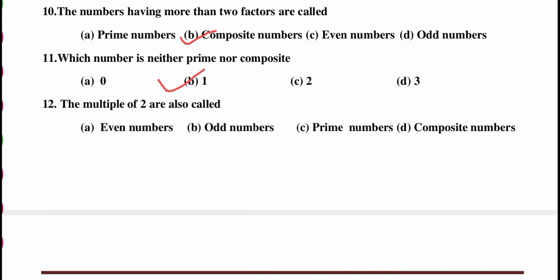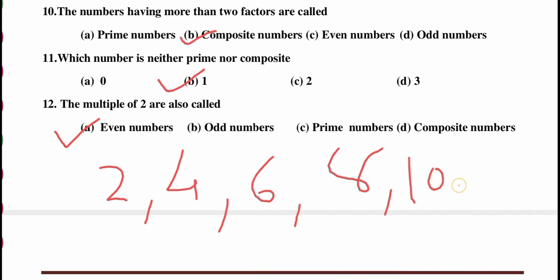Question number 12: the multiples of 2 are also called — even numbers, odd numbers, prime numbers, or composite numbers? We can call them even numbers, because 2, 4, 6, 8, 10 etc. are all multiples of 2 and they are all even numbers.